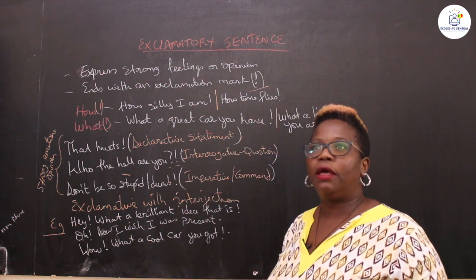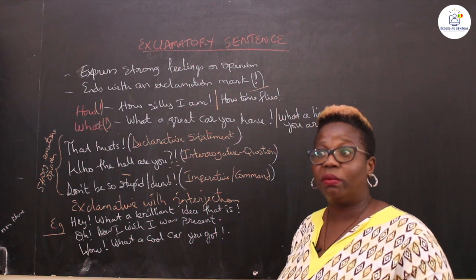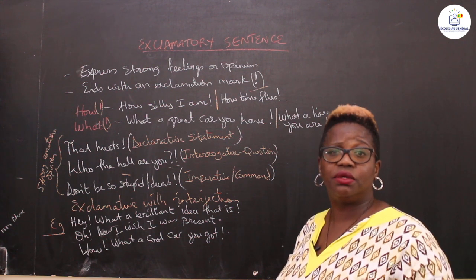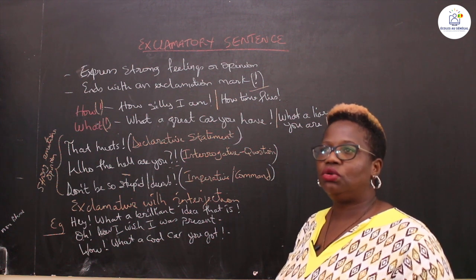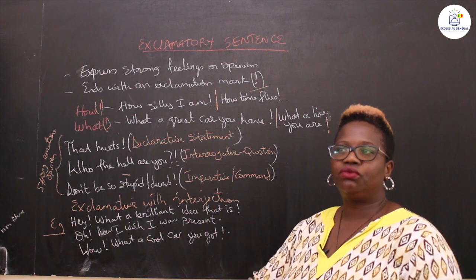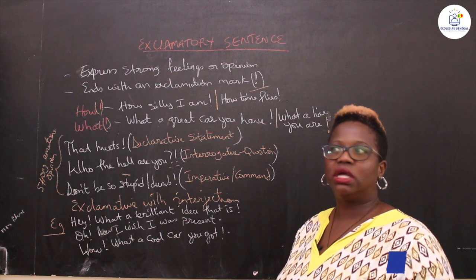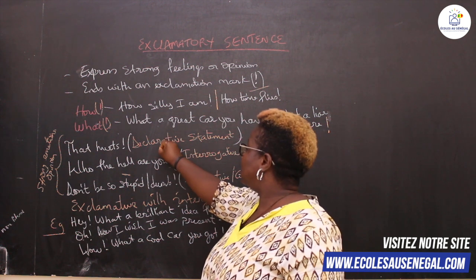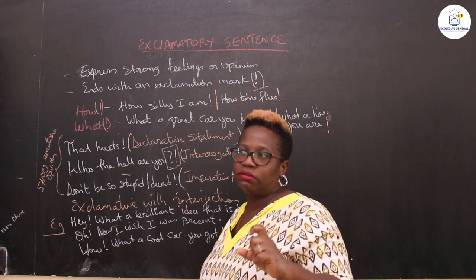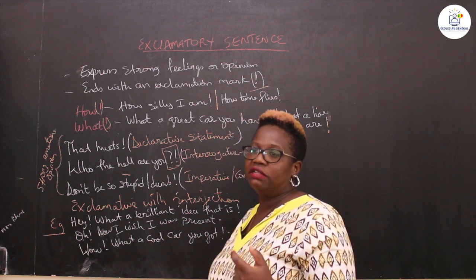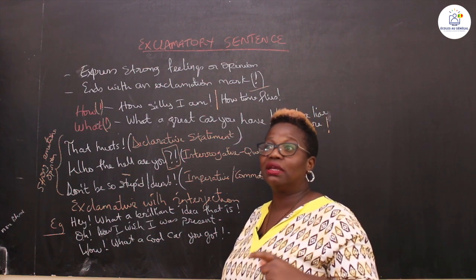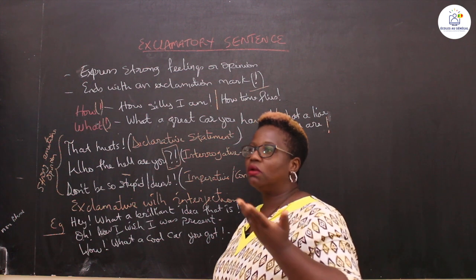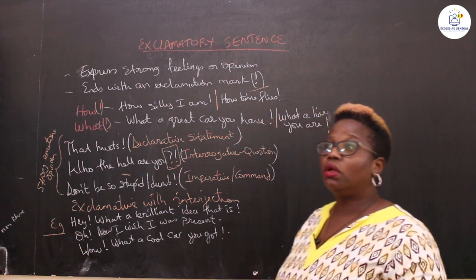When you say 'Who the hell are you?' you're not really expecting an answer. It's a rhetorical question — you're asking why this person is interrupting or talking to you. So you must put a question mark and then an exclamation mark. That combination is very important because it's a question that doesn't necessarily require a response.